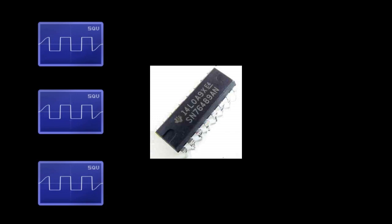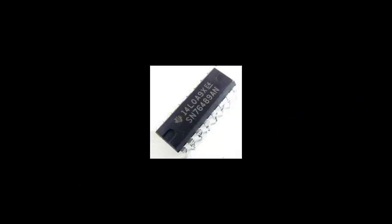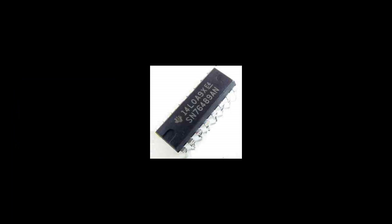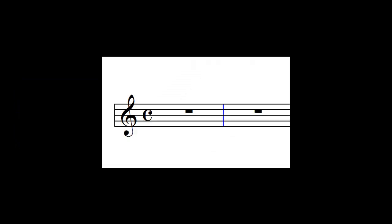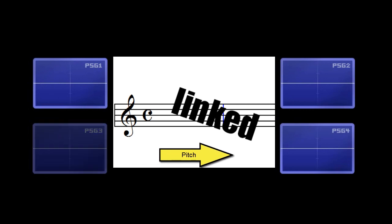This chip has three channels of 50% width square waves and one dedicated noise channel. The noise channel comes with the standard two types of noise: random and periodic. The noise channel has four available pitches: A on the fourth octave, A on the third, A on the second, and what we'll call linked. That last pitch actually steals the pitch information from the third square channel and assigns it to the noise channel.